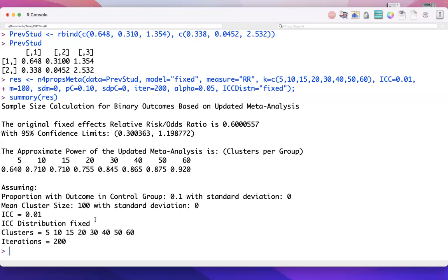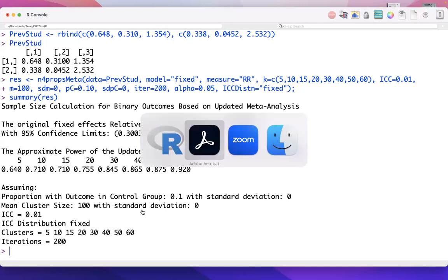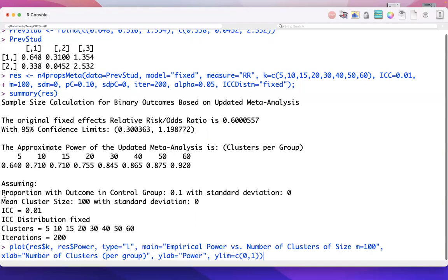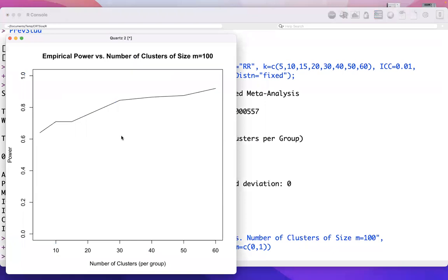Now, once again, we see some of the distributional ICC and cluster size assumptions are included for your reference. But where this gets particularly useful is we can perform quick, simple plots to visually see what our empirical power is going to look like.